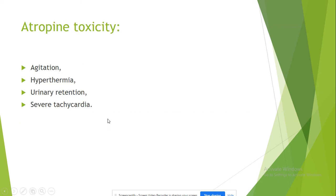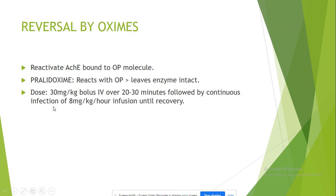Sometimes we can overdose the patient with atropine, and the patient will develop agitation, hyperthermia, urinary retention, or sinus tachycardia. The other specific treatment is oximes. The common oxime used is pralidoxime, which reacts with the organophosphate and leaves the acetylcholinesterase enzyme intact. The typical dose is around one gram, given over 30 minutes.